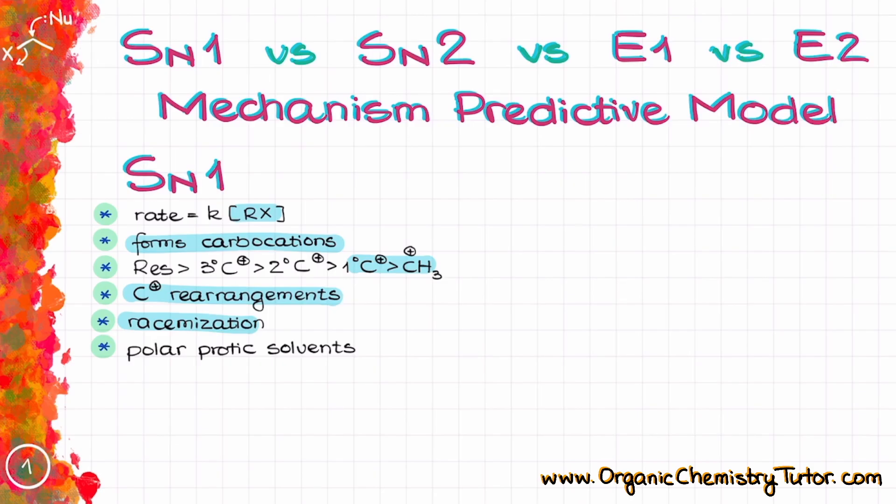The SN1 reactions also require polar protic solvents like acids or alcohols. The solvent is extremely important for the SN1 reaction, as without it there will be no reason for the leaving group dissociation. Additionally, the solvent typically is the nucleophile in the SN1 reaction as well.